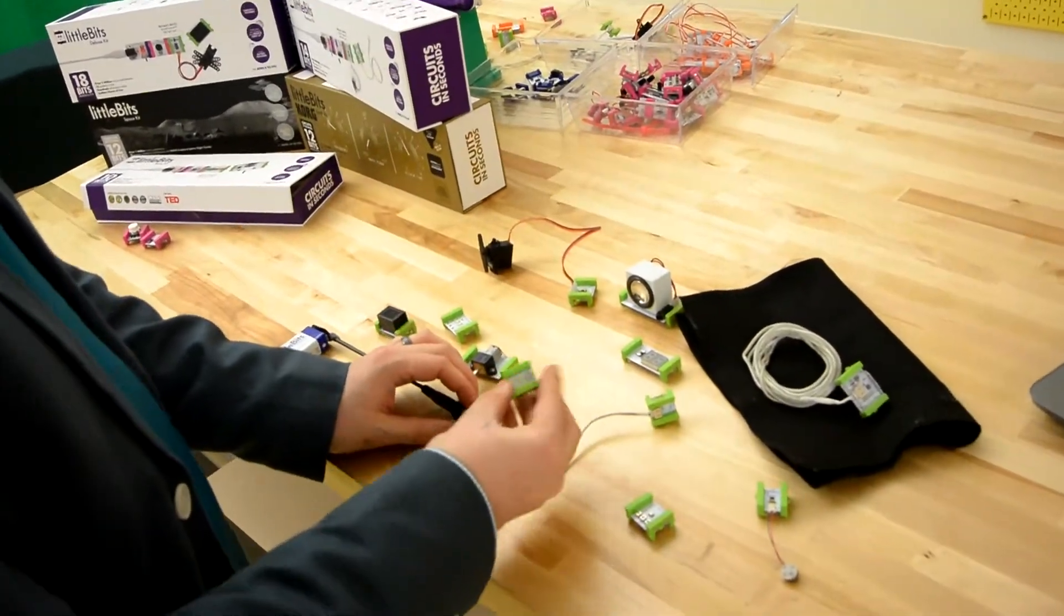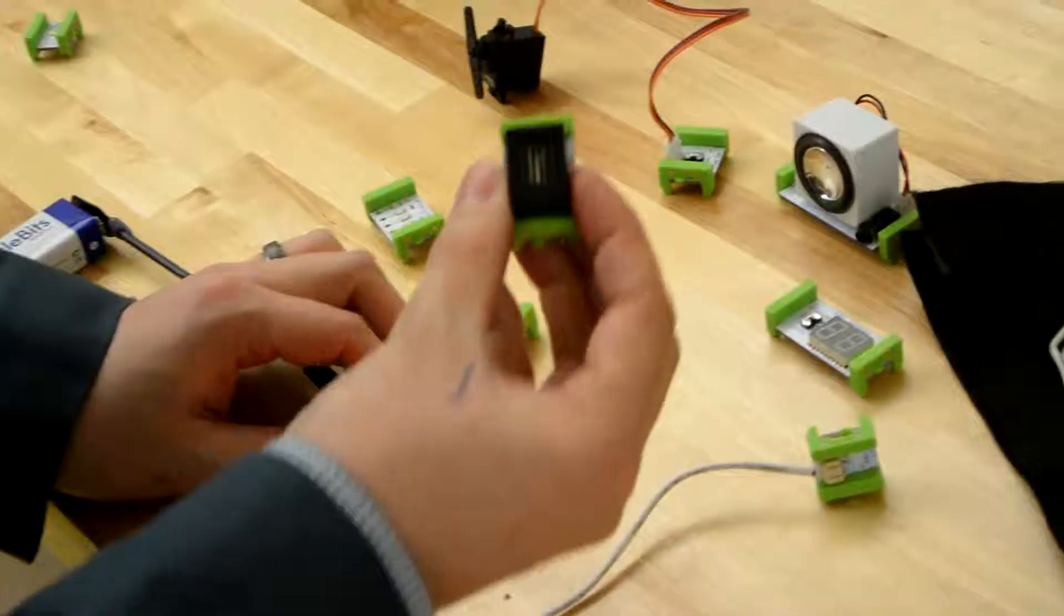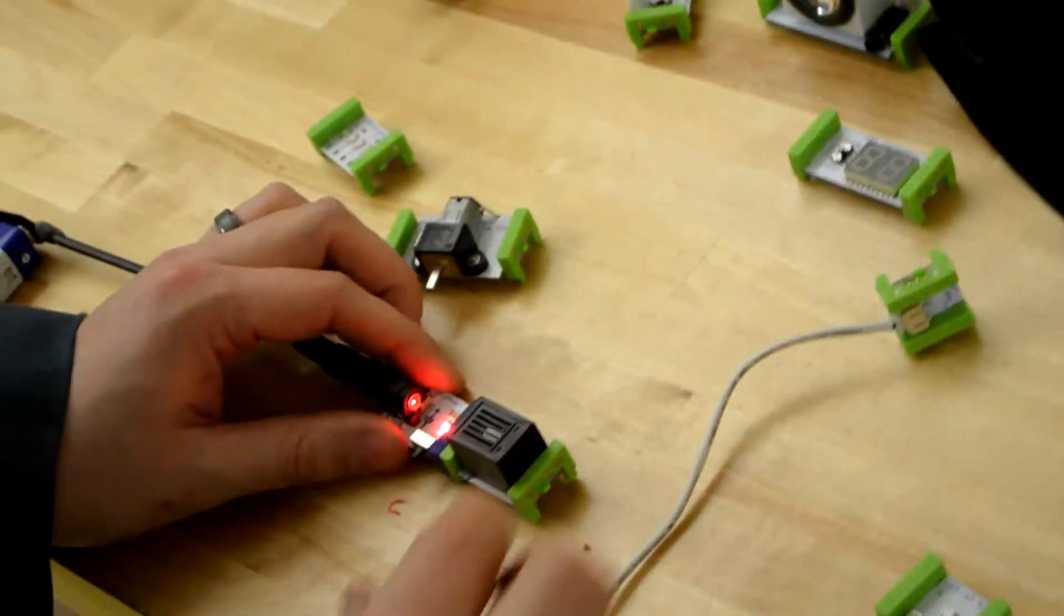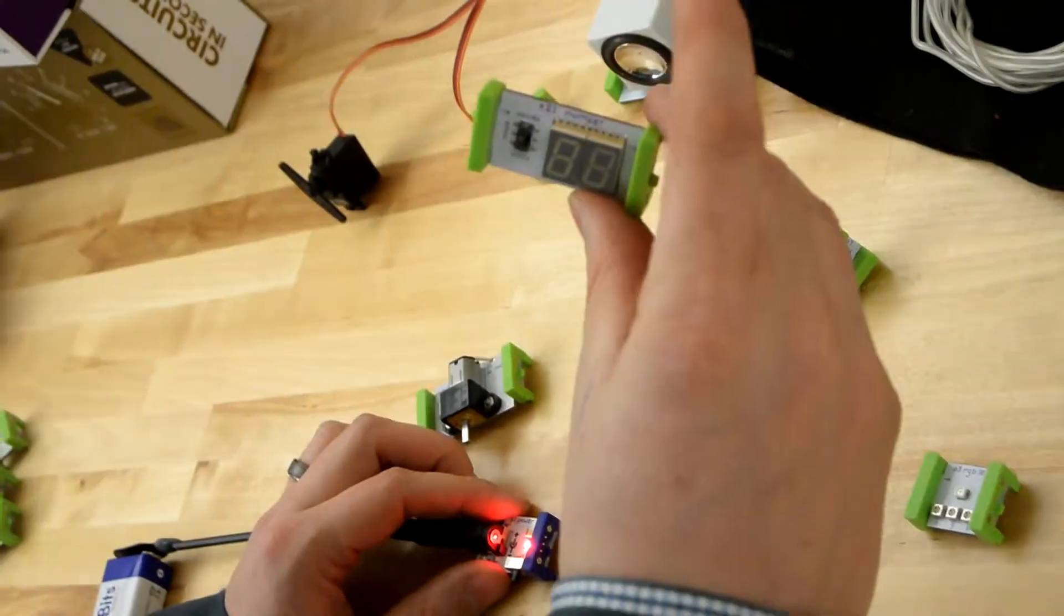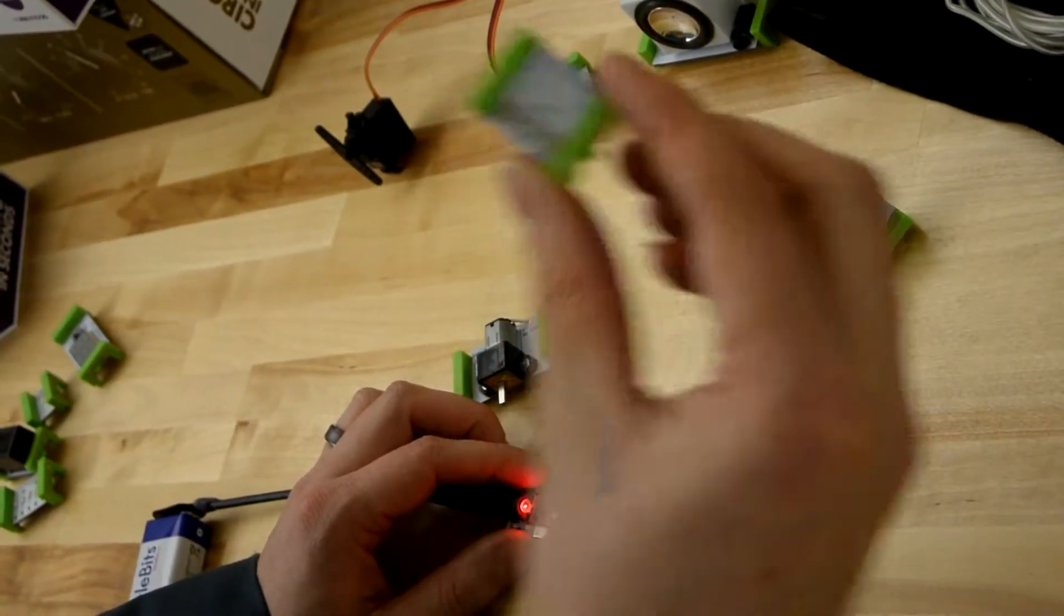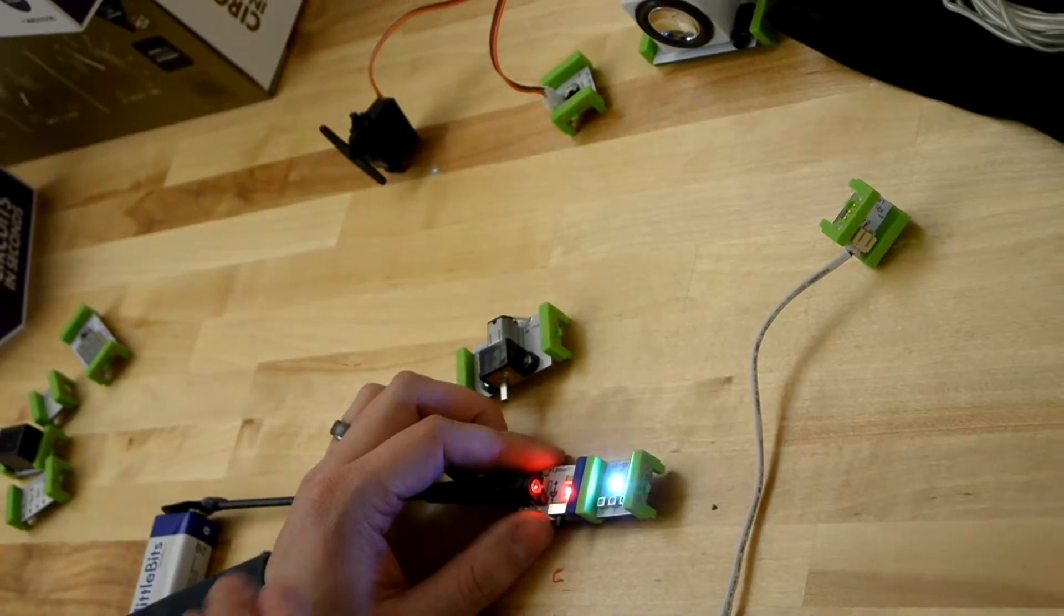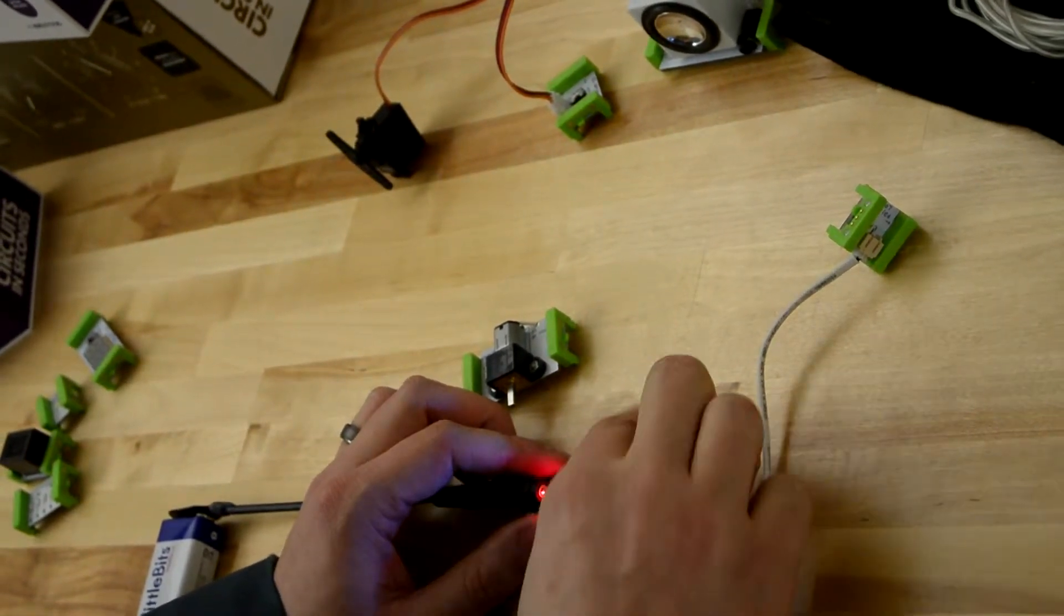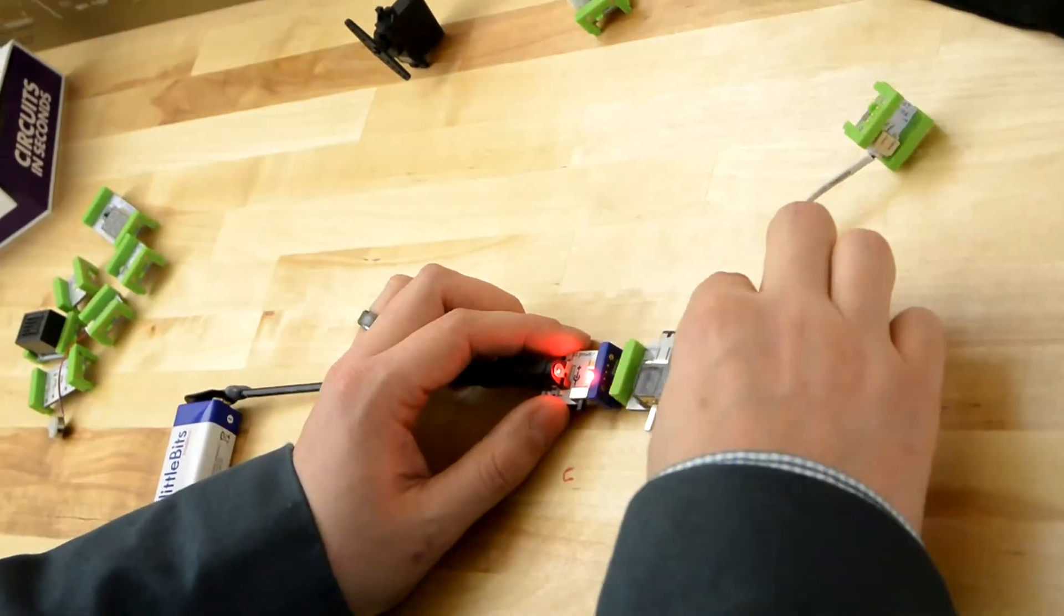So we have everything from a bright LED, a buzzer, a bar graph, a number readout, a red, green, and blue LED that you can change to any color that you want, a vibration motor, a DC motor...